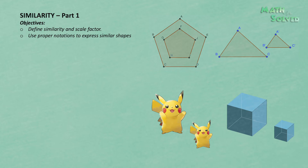In this video we are going to go over some basics in similarity. Here we have four groups of similar figures — pentagons, similar triangles, Pikachus, and two cubes. The concept of being similar is very intuitive: if two figures have the same shape, then you can say the two figures are similar. But here we want to express this idea in mathematical language, which should have two aspects.